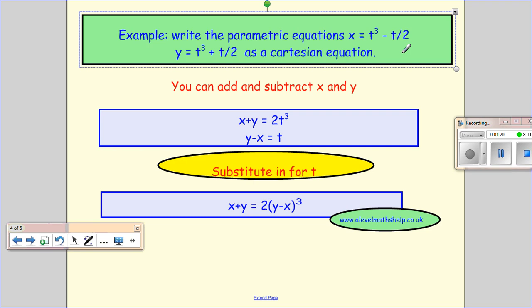So if I do x plus y, the t over 2's disappear and I get 2t cubed. And I do y minus x, the t cubed's disappear this time, and then I get 2t over 2 minus minus t over 2, which gives me just t. And now I can see I've got this t on its own, and I feel much more comfortable about substituting.